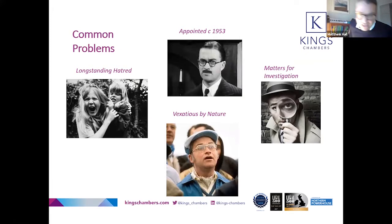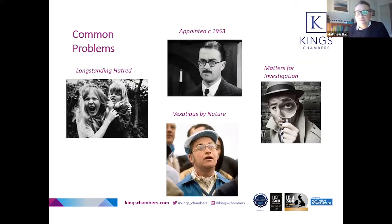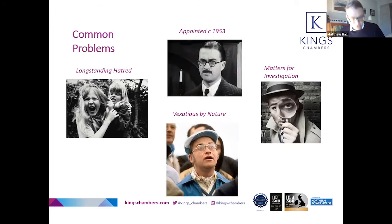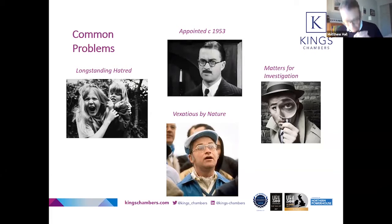How does the problem arise — what happens in the run-up to one of these claims to remove a PR? I'll deal with this by reference to common themes drawn from my experience. The first type is the long-standing hatred case: people, quite often family members, who really hate each other. When somebody dies, all of a sudden they've got to cooperate, and the problems stem from the fact that they couldn't agree on how to go and get a glass of water. There'll be a deadlock.